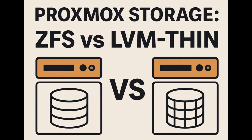ZFS has an incredible built-in ability to snapshot your data and then effortlessly send it to another machine — think instant disaster recovery. You can literally clone your entire server state, almost in real time, to another box with minimal fuss. Then there's ARC, the advanced caching system, which cleverly uses your system RAM to keep frequently accessed files handy and can seriously speed up read operations. For those who love to tinker and fine-tune every setting, ZFS gives you tons of options. Plus, it does self-healing checksums for data integrity.